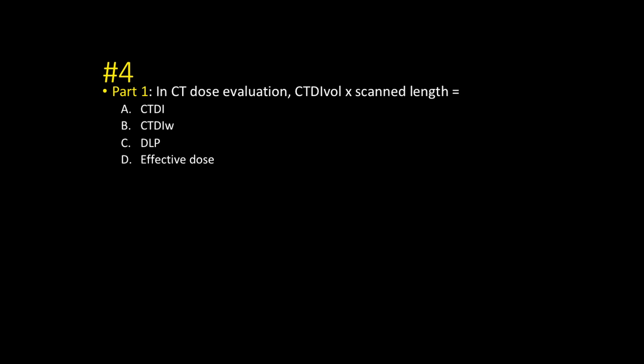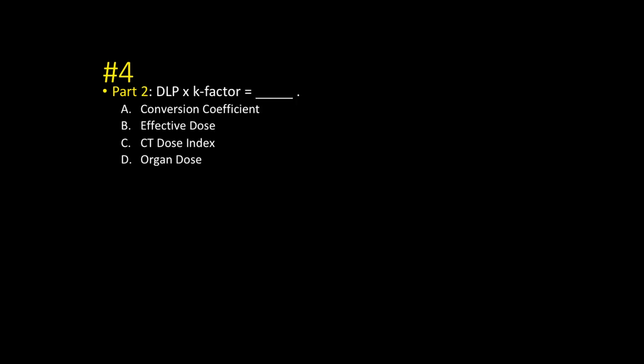Number four — not an artifact, more of a physics question. In CT dose evaluation, the CT dose index volume times scan length equals the DLP, the dose length product. Part two: the dose length product times the K factor gives you the effective dose. The K factor is the weighting factor specific to whatever organ you're imaging. Effective dose is measured in millisieverts; the DLP is measured in milligray per centimeter.